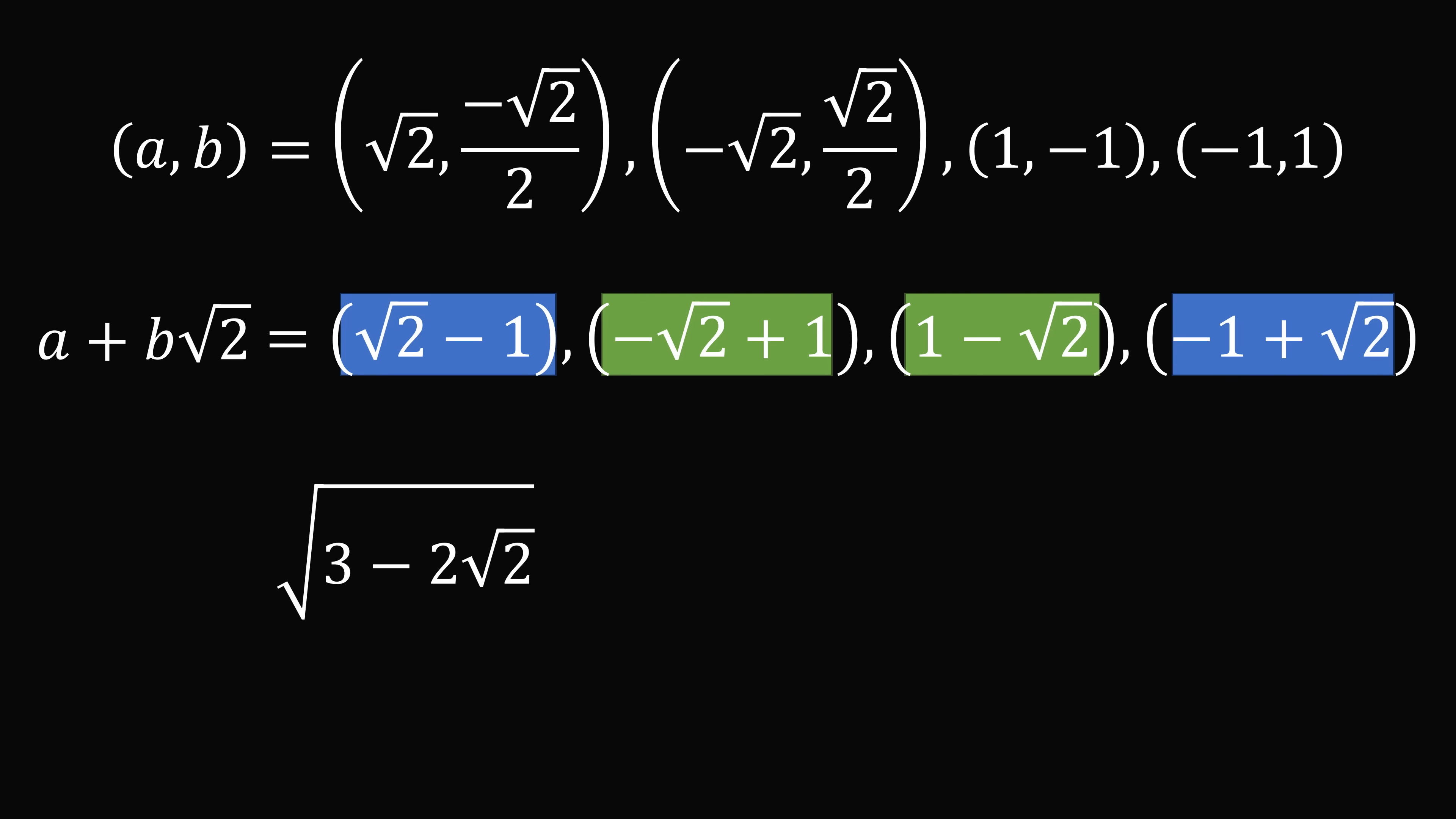Now we want the principal square root of 3 minus 2 root 2, and that must be greater than or equal to 0. But we know that negative root 2 plus 1 is less than 0, so we can eliminate this possibility. Therefore, we know this simplifies to be root 2 minus 1. And that's the answer.